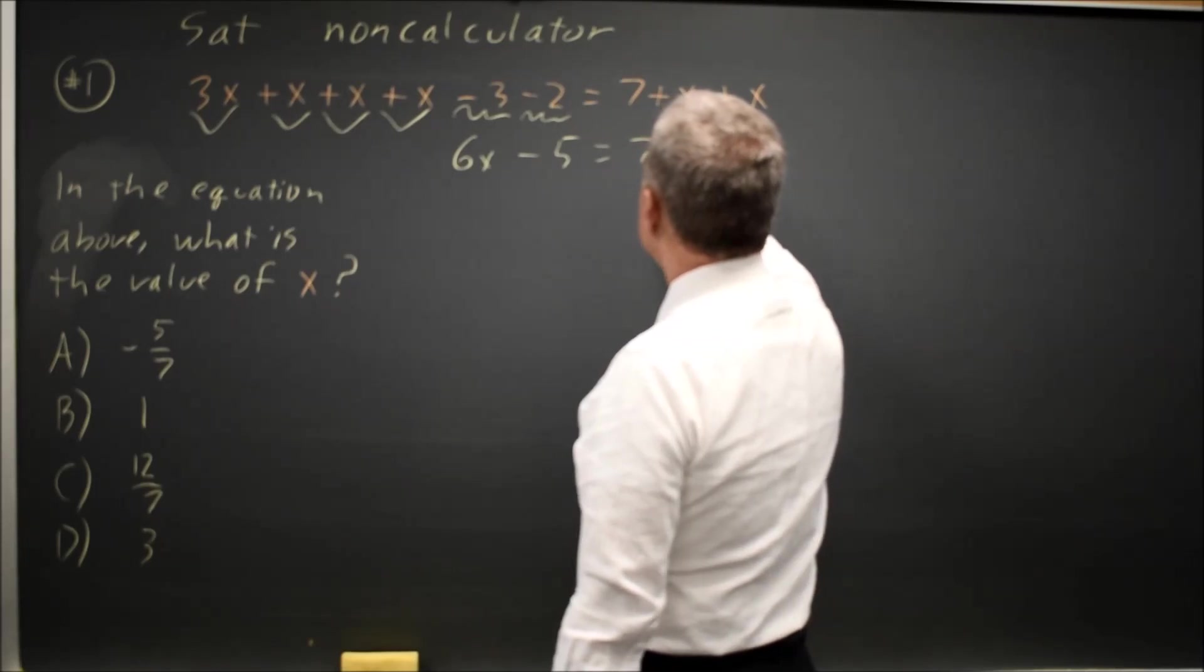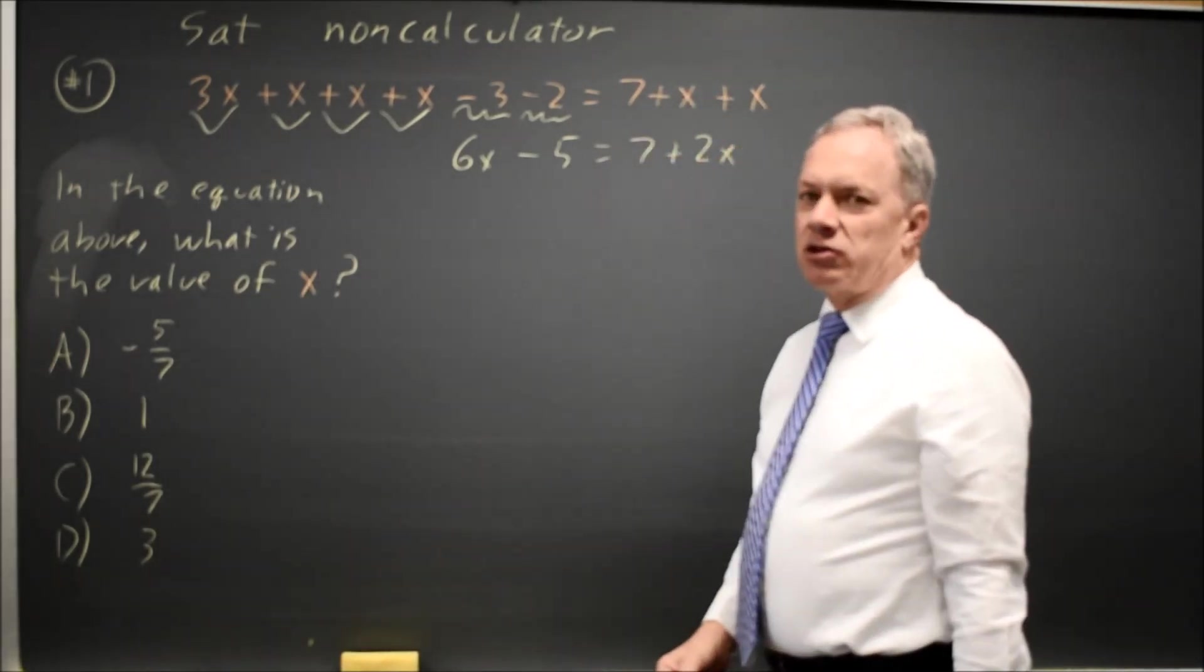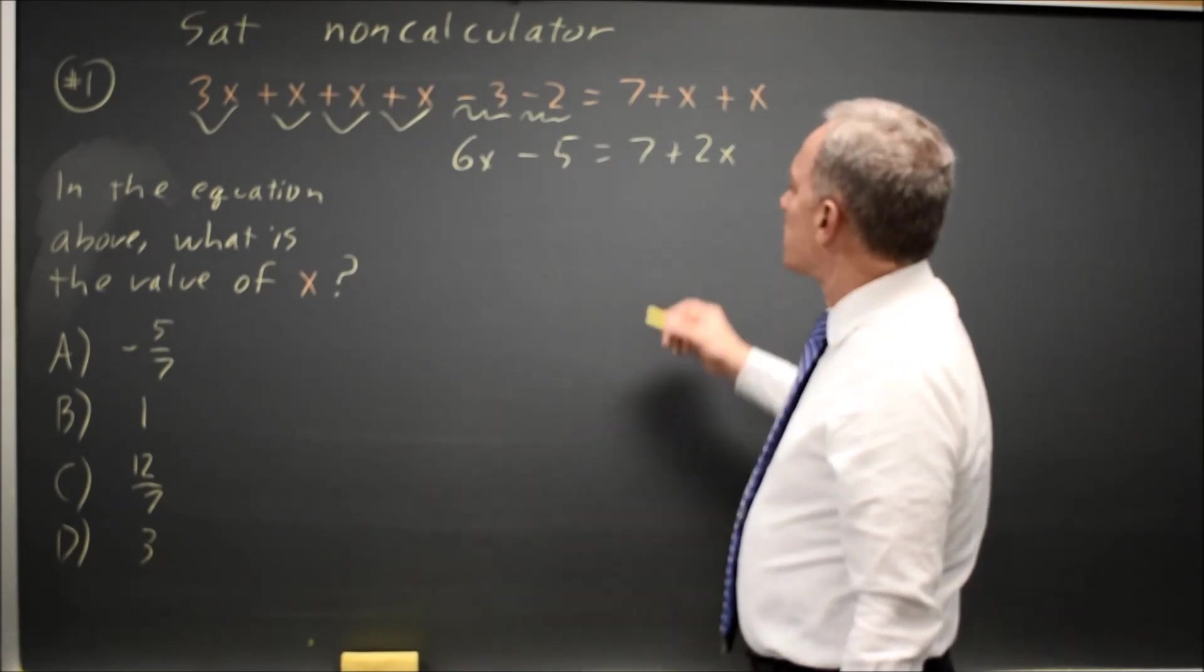On the right I have 7 plus x plus x is 2x. Now that the terms on each side are combined, I can combine like terms.